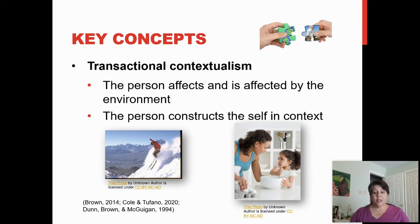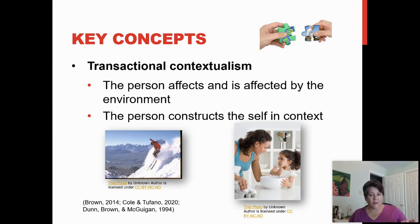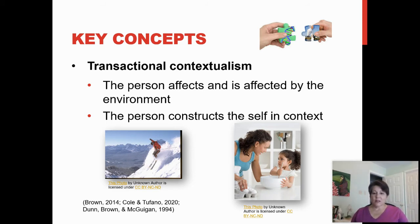Here's another key term not in your textbook: transactional contextualism. Think of this as happening over the long term, over a lifespan. Transactional contextualism means that the person affects and is affected by their environment, and there's a sense in which the person is getting an identity, constructing oneself in context. This concept is very similar to MOHO's concept of occupational identity — a similarity or bridge between the two models, even though they come from very different places.